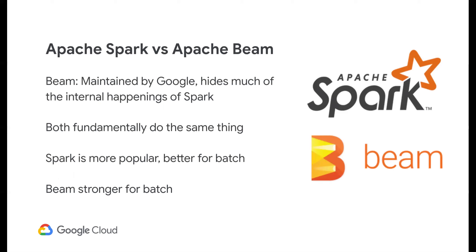Spark out of the box is better for doing things like machine learning, graph processing, and some of the other things mentioned earlier where Beam is inherently less so. As a general rule of thumb, I typically say Spark is better suited for batch processing, where Beam is stronger for streaming — they both can do the other depending on your familiarity. Beam actually runs on top of Spark using what's called the Spark Runner, or another open source tool called Flink which is also built for streaming. Beam is also heavily supported on Google Cloud — we have a tool called Cloud Dataflow that serves as a separate runner for executing your Beam workflows.